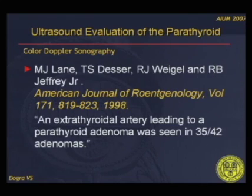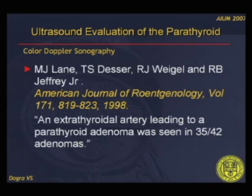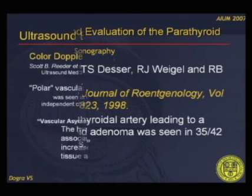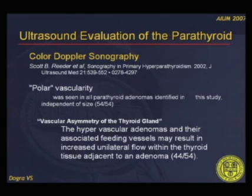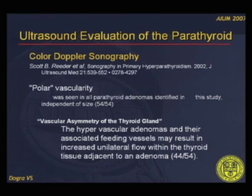An additional sign — the extra-thyroidal artery — was described by Lane and Hall and published in AJR in 1998, seen in 35 of 42 adenomas in their study. Additionally, polar vascularity and vascular asymmetry of the thyroid gland can be seen, as published by Scott Reeder in JUM in 2002.